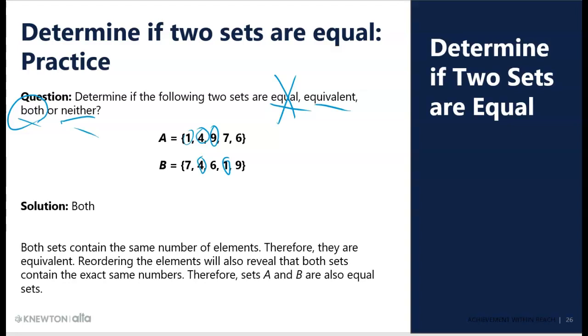So, so far, the one, the four, and the nine exist in both sets. Seven is in A, seven is in B, six is in A, six is in B. So, these are equal and equivalent. They have the same number of elements, and I can find all of the elements of A also exist in B, and because there's the same number of elements, there are no leftovers. That's what you're looking for to see if they are equal and equivalent.